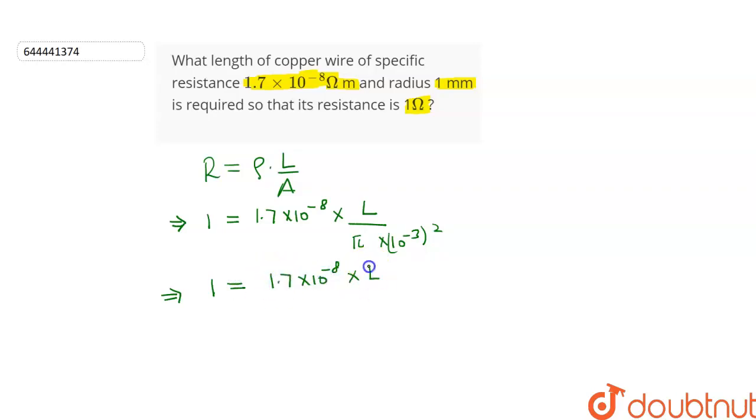After simplifying this, we get L is equal to pi into 10 to the power 2 upon 1.7. Further solving this will give us L is equal to 184.7 meters.